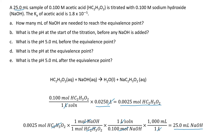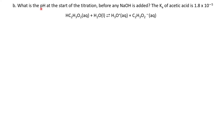Let's go ahead and do part B. We want to know what the pH is at the start of the titration. We do need our Ka of acetic acid. We're just calculating the pH of a weak acid solution. Here is our equation for a weak acid in aqueous solution — it is in equilibrium because it's a weak acid, so I need to set up an ICE table.